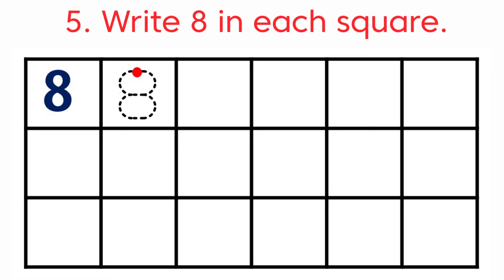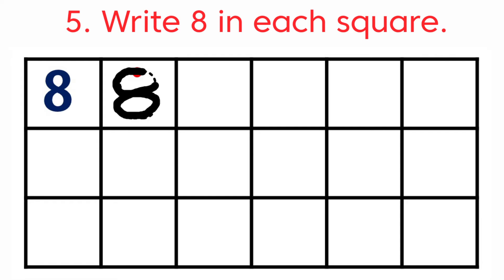Now look at the fifth one — write 8 in each square. They have given some boxes. In the first square they have given number 8 already. Look at the second square — they have given number 8 to trace. Starting from the red dot, draw a forward curve, then facing downwards a backward curve, then facing up a forward curve, and then a backward curve at the top. This is how we write number 8.